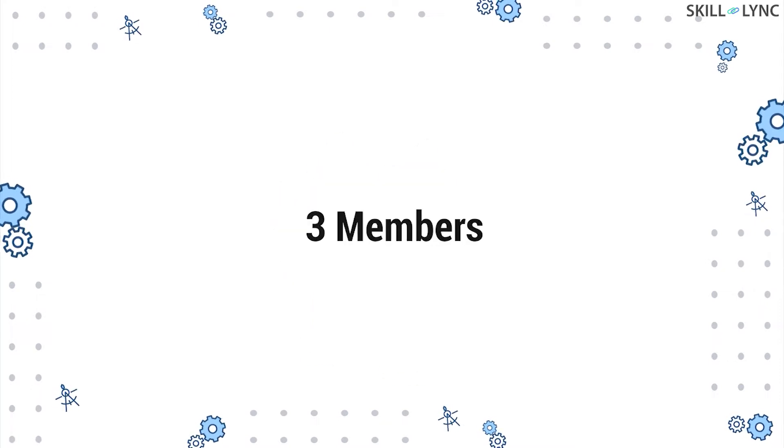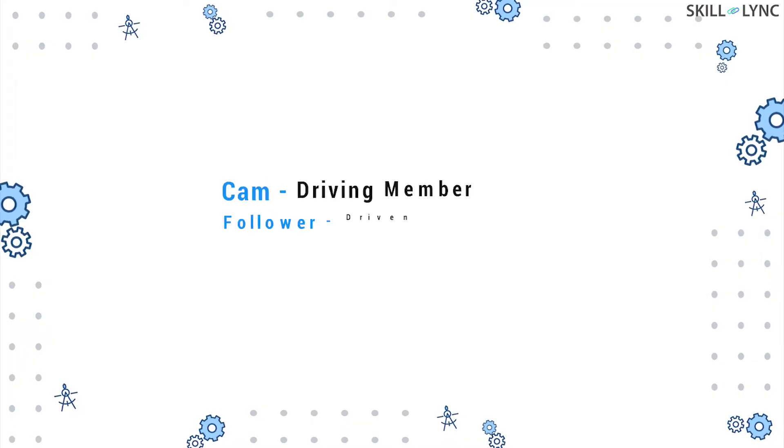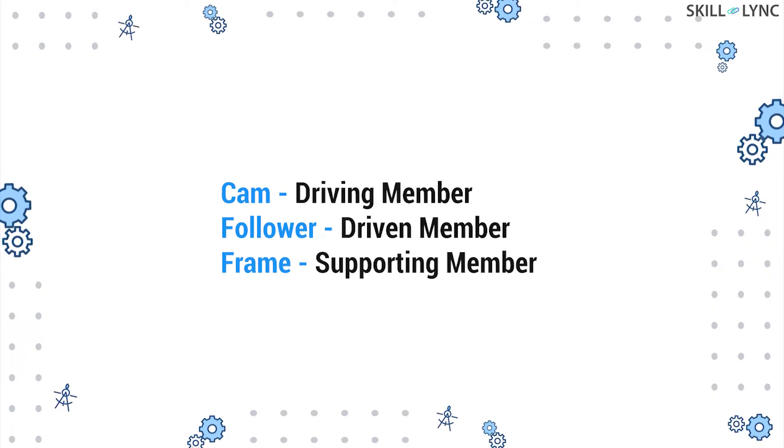A cam and follower setup consists of three members. The cam acts as the driving member and the follower acts as the driven member. The third member is the frame which acts as a guide for the follower.